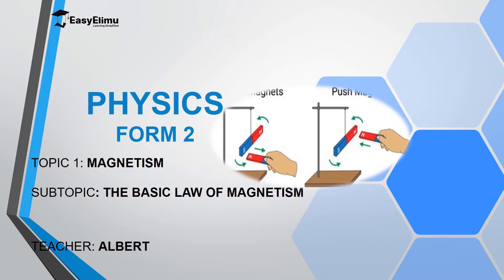Welcome to ECL EMU, Learning Simplified, and welcome to this lesson. In the previous lesson, we discussed properties of magnets, where we looked at properties like magnetic poles, magnetic and non-magnetic materials, the directional property of magnets, and breaking a magnet.